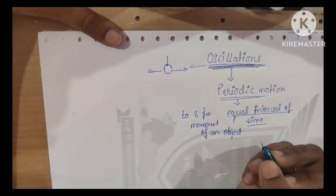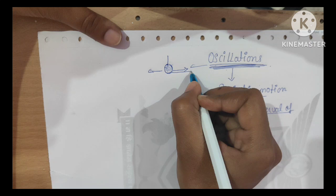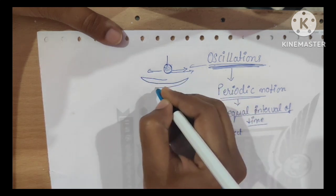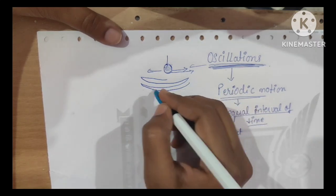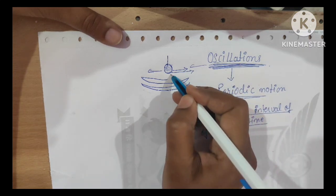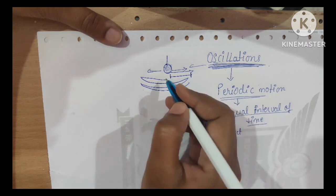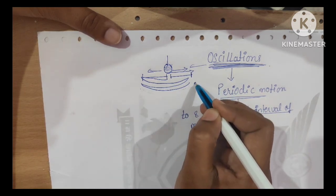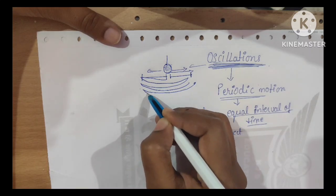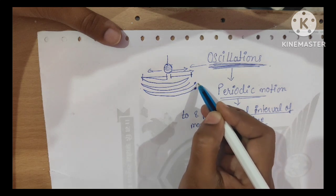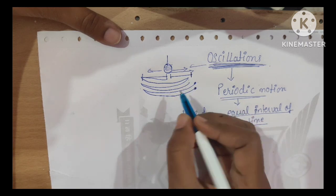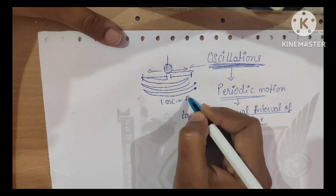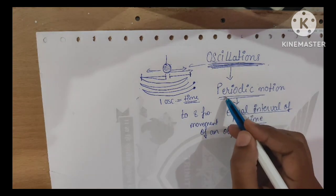For example, if you have a pendulum and you release it, it travels a distance and comes back to the point where it was released. If it comes back to that point, that is called one oscillation. How many oscillations happen in the same time — we call this periodic motion.